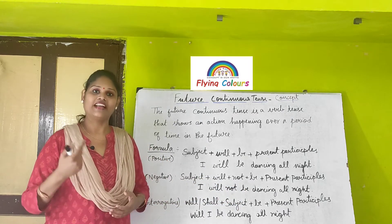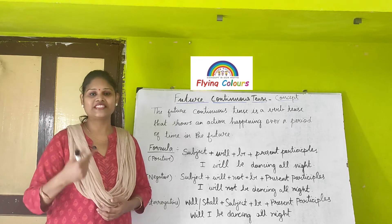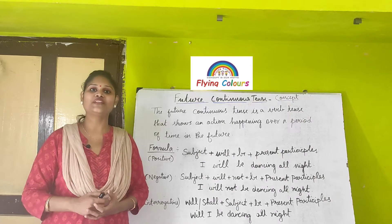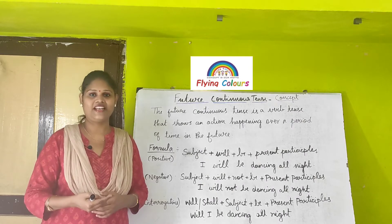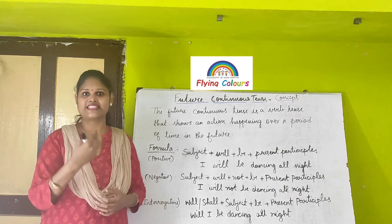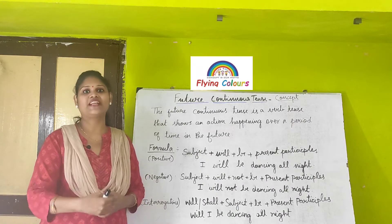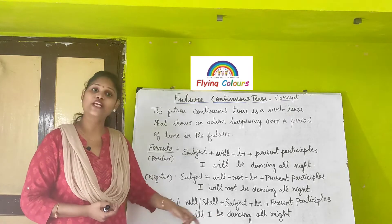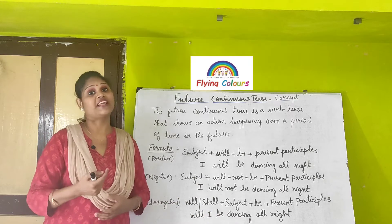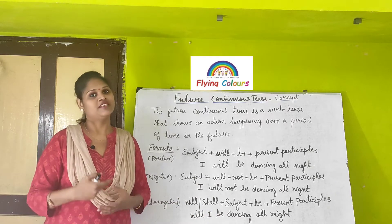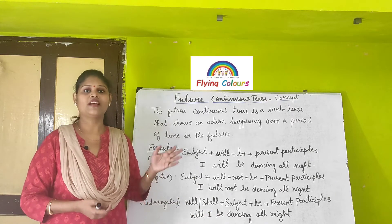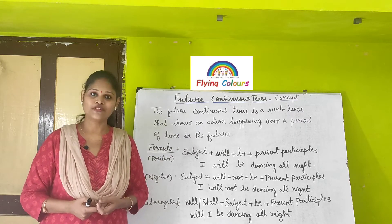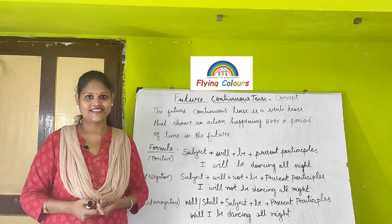For interrogative sentences in future continuous tense, you can use: will or shall plus the subject plus be plus present participle. For example, 'Will I be dancing all night?' or 'Shall I be dancing all night with you?' These are the examples for positive, negative, and interrogative sentences in future continuous tense.